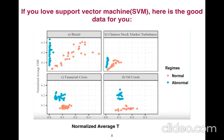You can distinguish between normal and abnormal regimes. For example, using support vector machines, you can define hyperplanes to distinguish between different regimes.